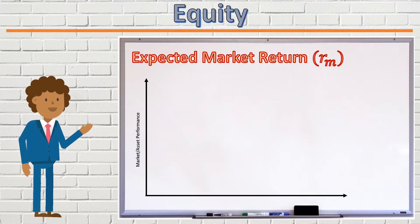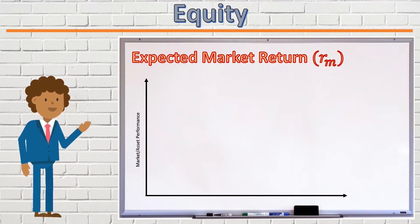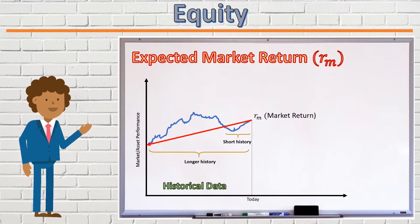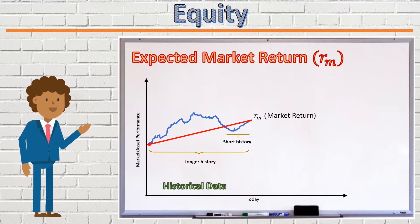The expected market rate of return cannot be determined in a completely objective and scientific manner. There are four main sources of information one can look at in order to determine their view on the expected market rate of return. The first is historical market returns. This methodology is objective, as history is fact. However, how far back one would look is subjective. Looking only at recent history could paint a misleading picture of how the market would generally perform, especially in the period immediately following a market disruption, for example.